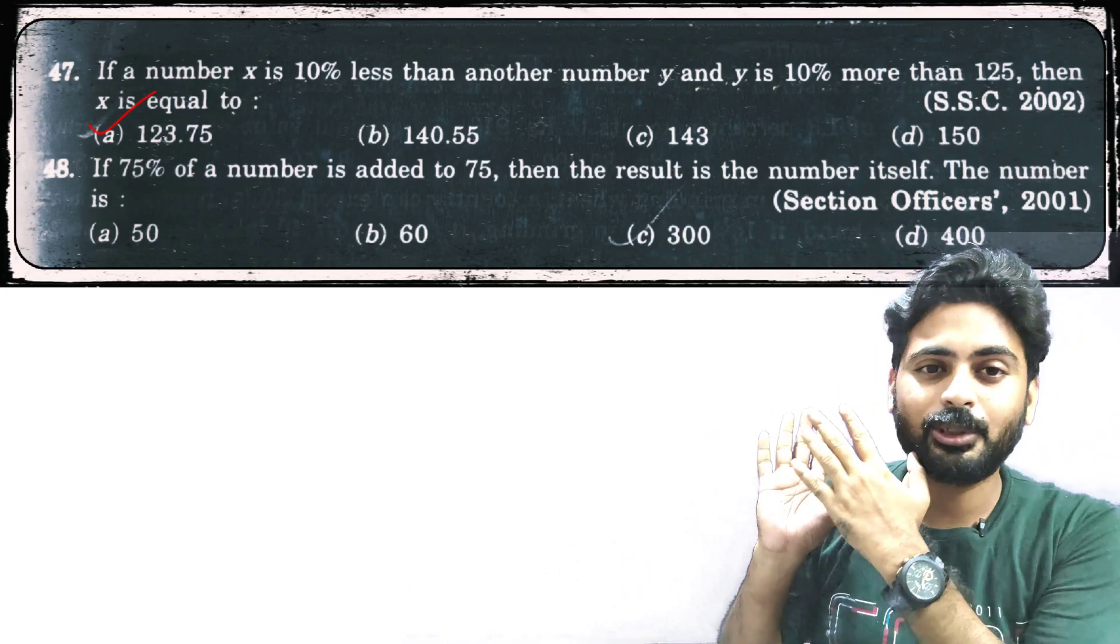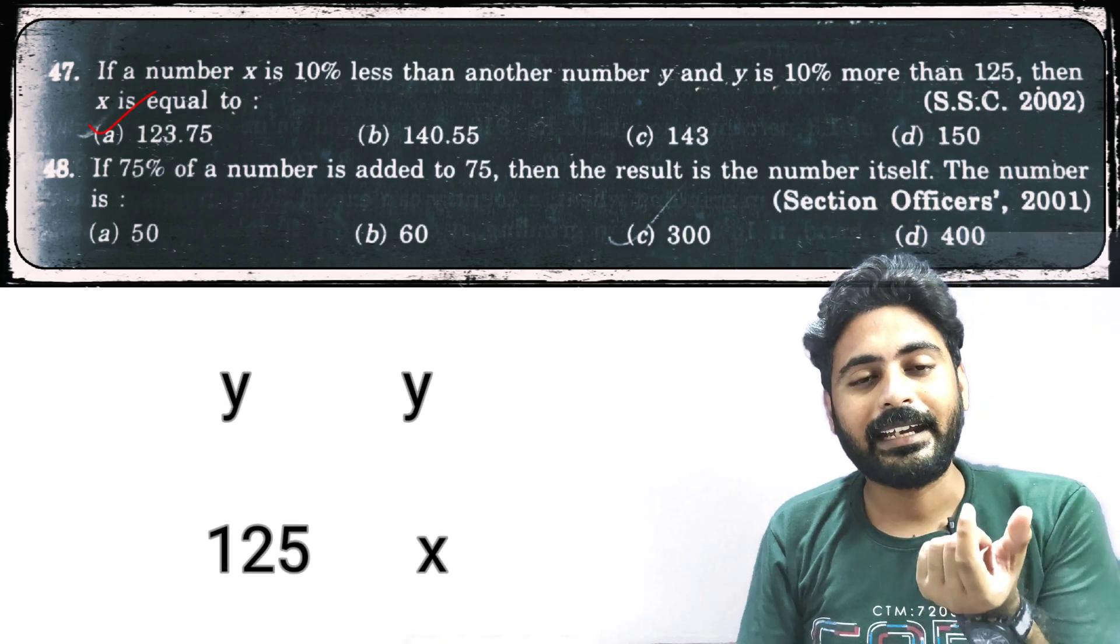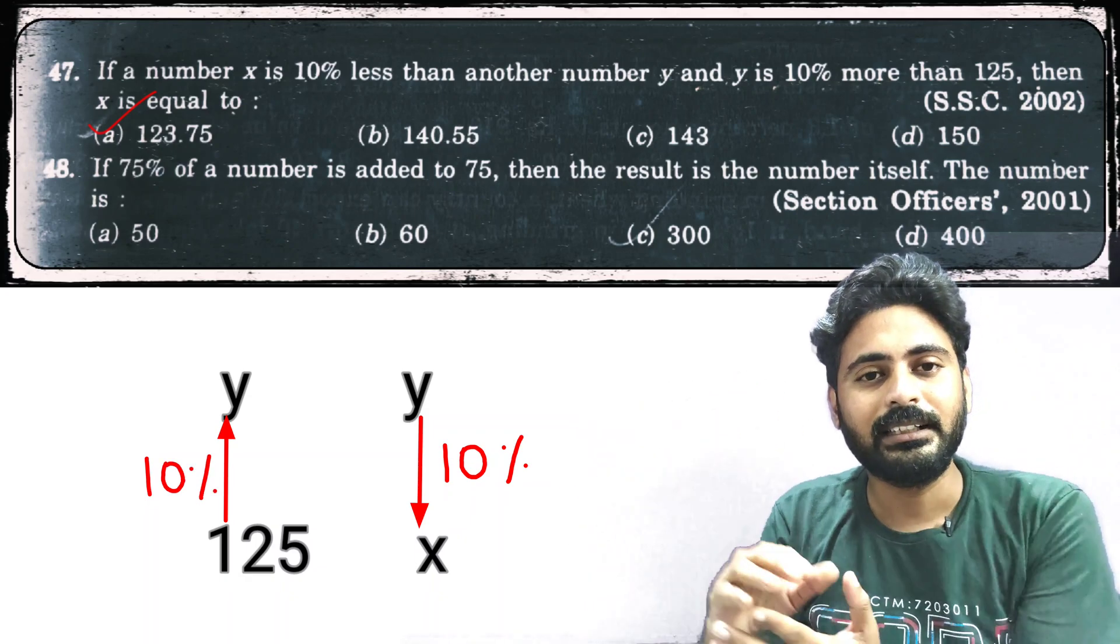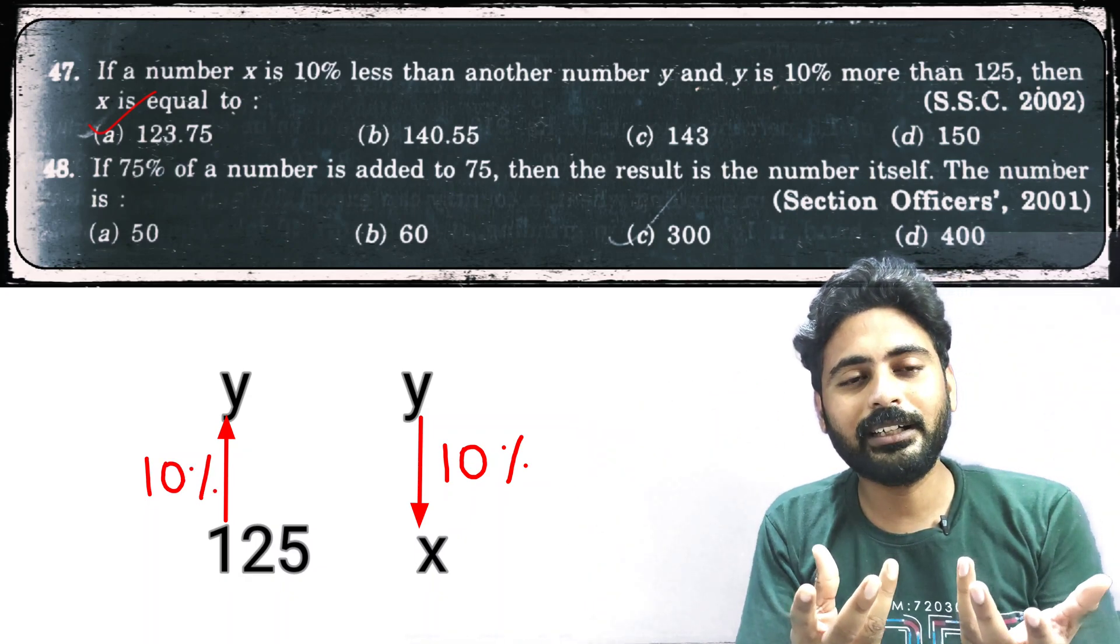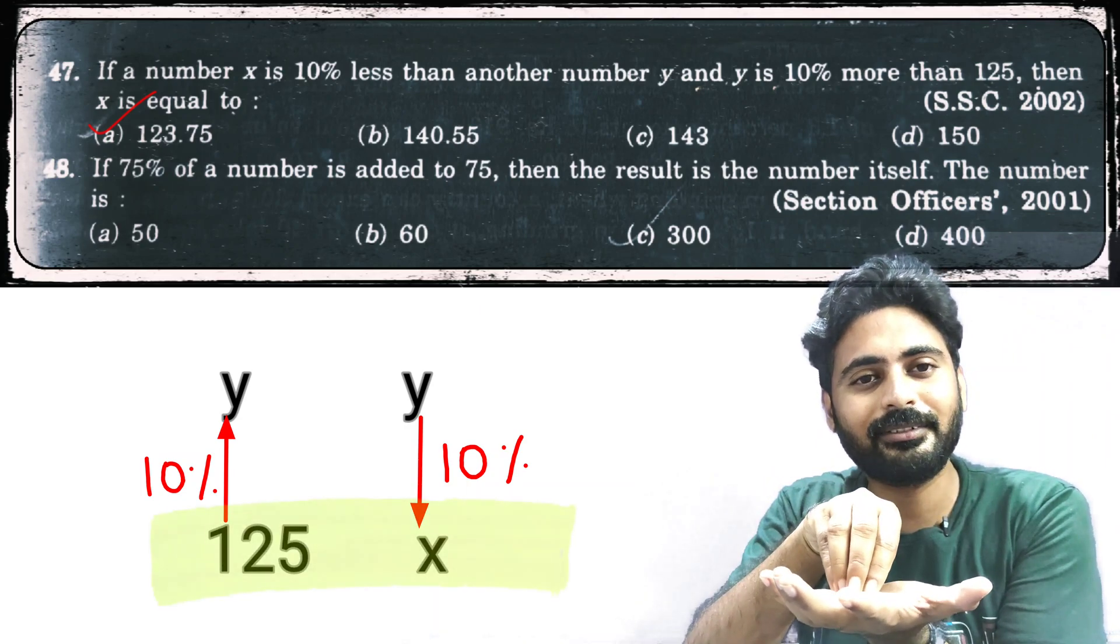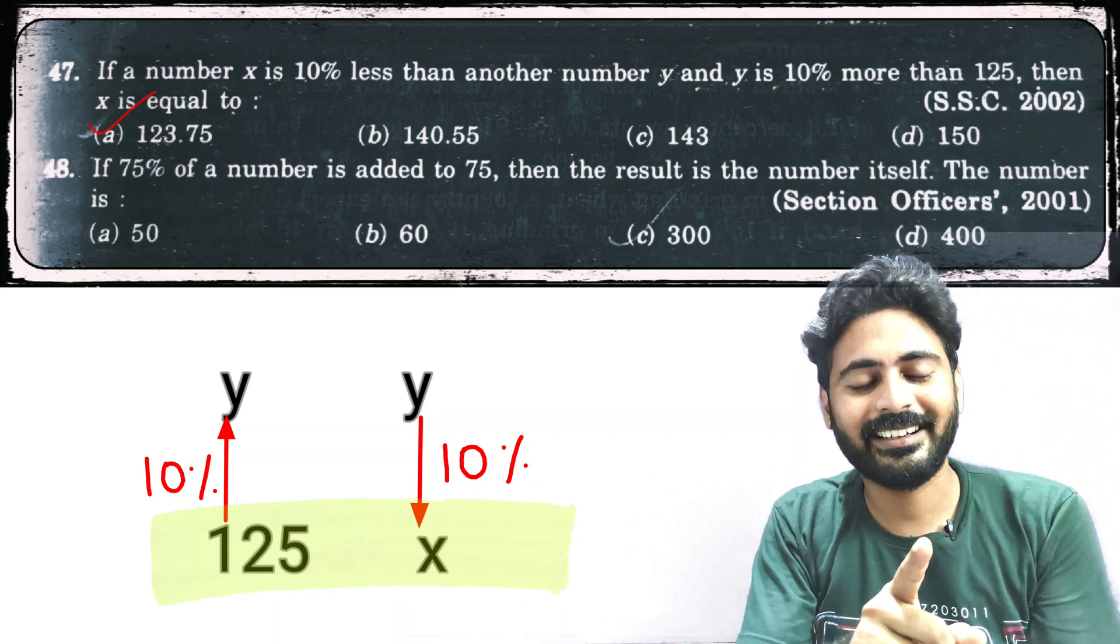Now pay attention to the question once again. What it says: x is 10% less than y and y is 10% more than 125. Eventually what we are trying to calculate is x. So somewhere it should be close to 125, right? Is it okay for you?